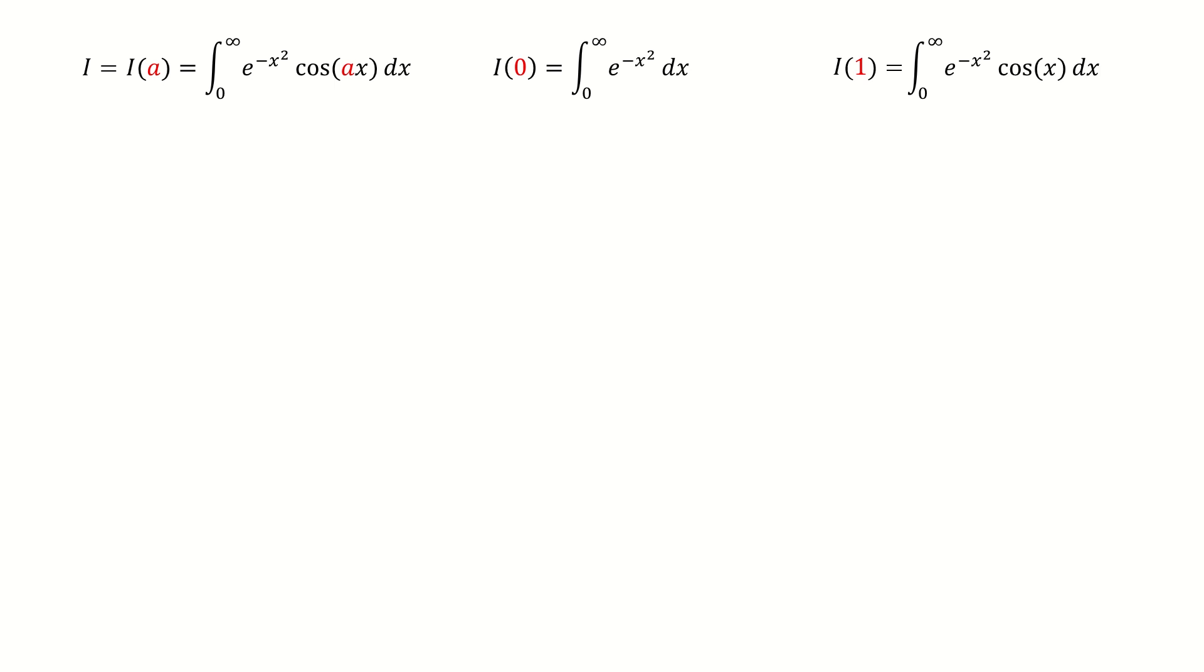And if we set a equals to 0, then we got a Gaussian integral, and it equals to square root pi over 2. If you don't know why this Gaussian integral equals to this value, you can click here to see it.